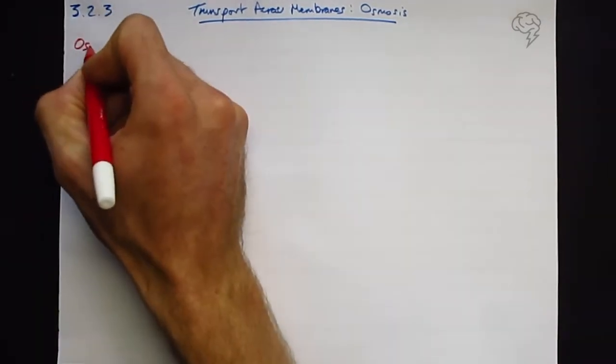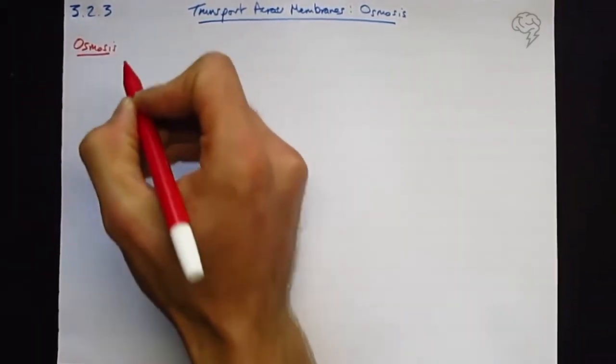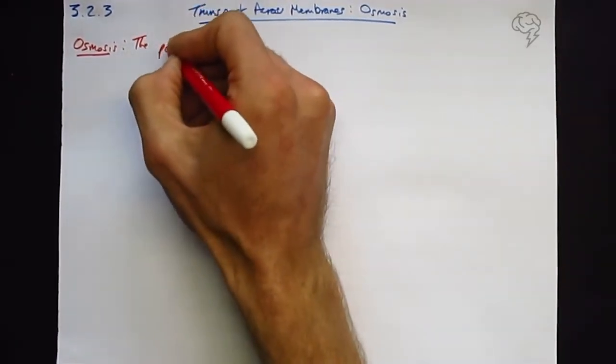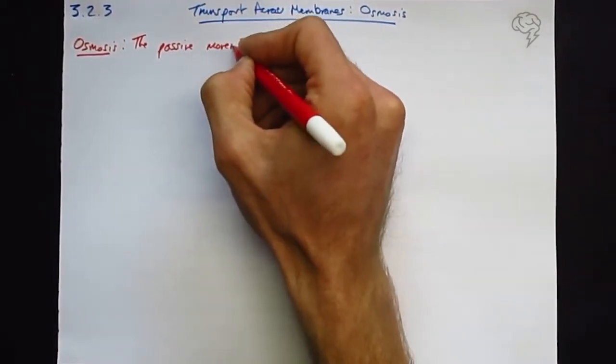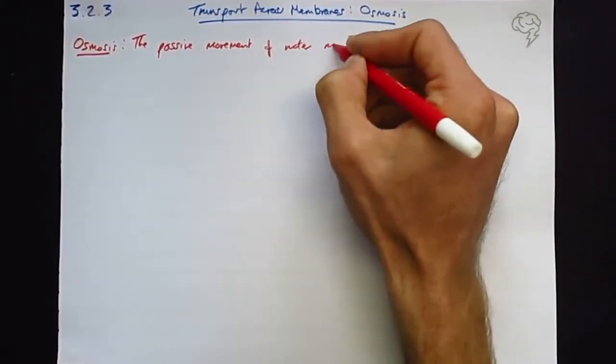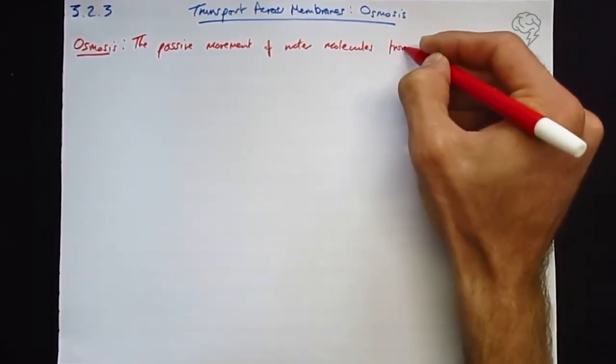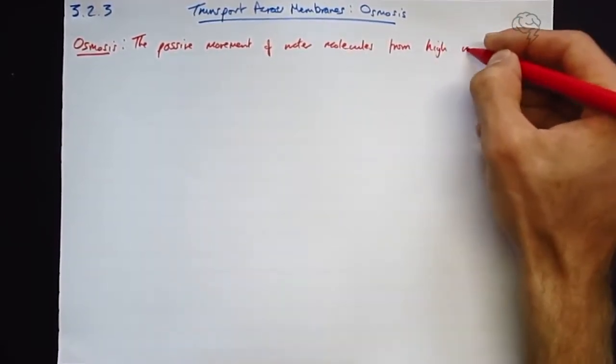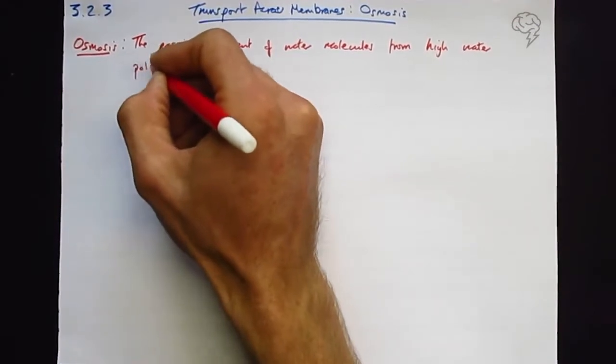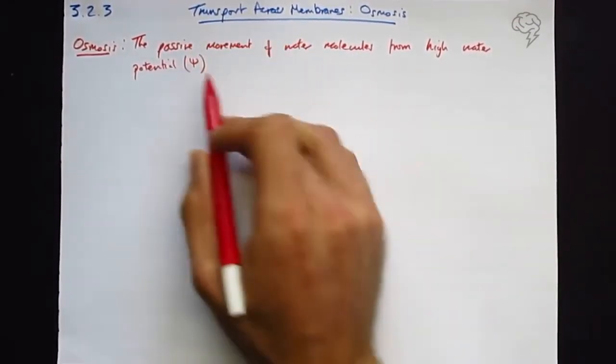Let's start with a key term definition. Osmosis is the passive movement, so not requiring ATP, of water molecules from high water potential to an area of low water potential, and it's across a partially permeable membrane.